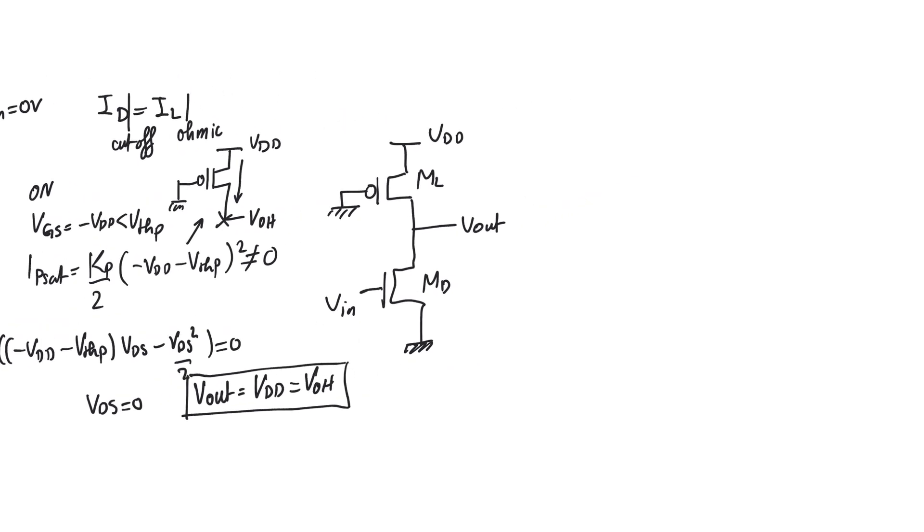So now let's find the other static point. When V input is equal to V output high is equal to VDD, the output is equal to V output low. So let's write the current equation and try to figure out the regions of operation. The driver is definitely going to be ohmic because the output, which is the output low, is a low potential. The gate of the driver is a very high potential. This NMOS device has no chance of being saturated.